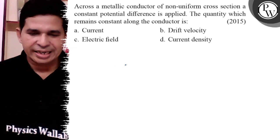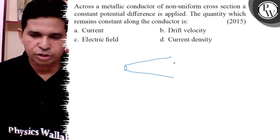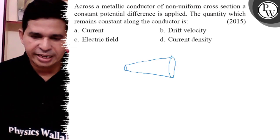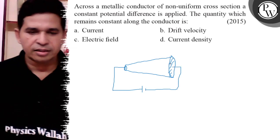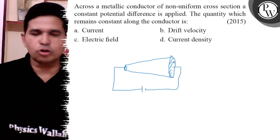We know that it is a wire of non-uniform cross section and a voltage is applied in between these two ends, and then current is constant.